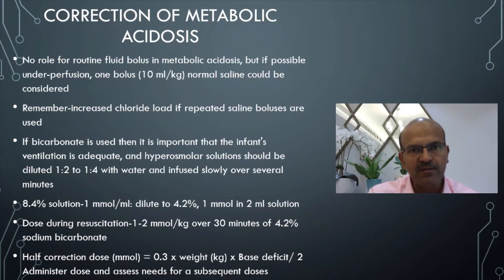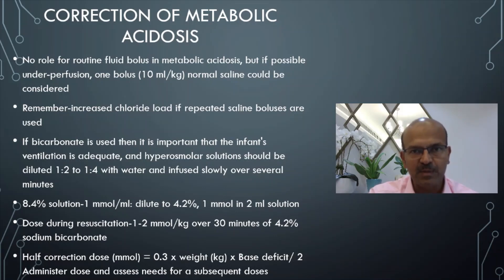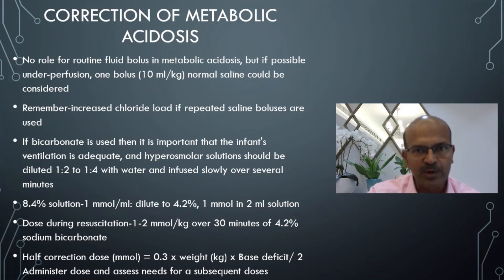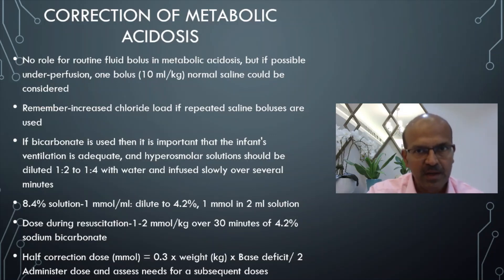There is no role for routine fluid bolus just because you see metabolic acidosis, but if there is possible under-perfusion, you consider one bolus of 10 ml per kilo normal saline. Don't give too much fluid, especially in a premature baby, because you have a higher chance of PDA opening up, and excess fluid is always associated with BPD risk and NEC risk as well. Be careful with fluid protocols in premature babies.